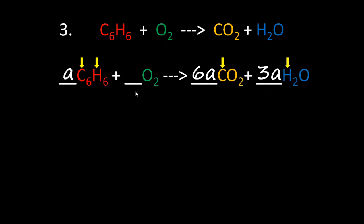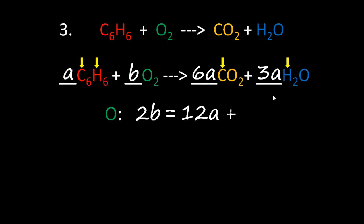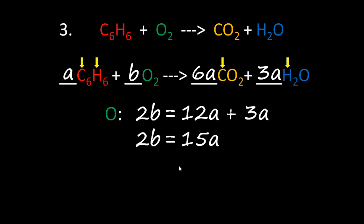Step two: we put a different letter 'b' in the remaining blank line. Step three: we balance the remaining element, oxygen. We have 2b oxygen atoms on one side. On the other side we have two times 6a equals 12a, plus one times 3a equals 3a. So 2b equals 12a plus 3a, which is 15a. This is already the simplest equation. From this equation, b equals 15 and a equals 2.